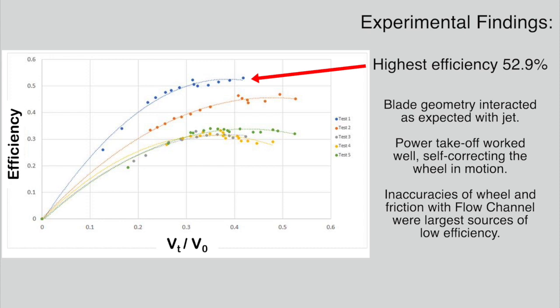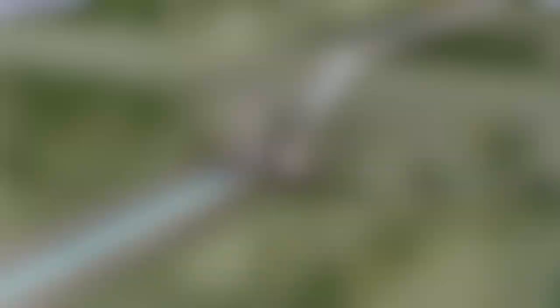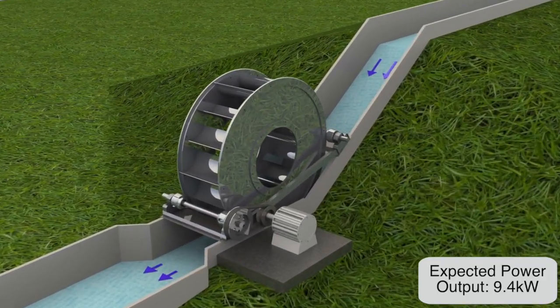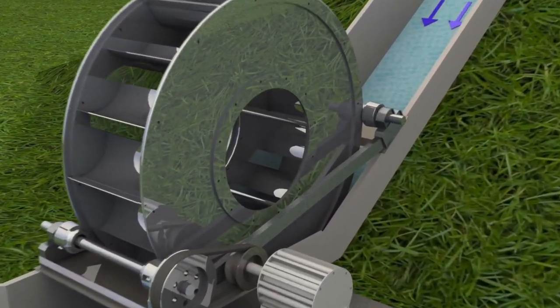Based on the model scale, we designed the full-scale device for this site. We expect the power output of the system to be 9.4 kW, which is likely to power 29 average Pakistani homes.